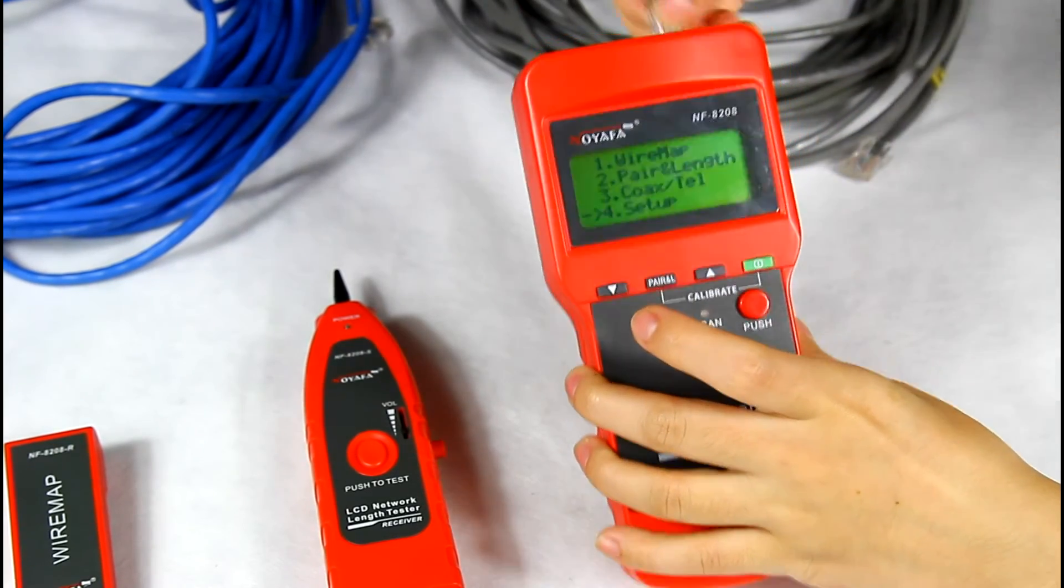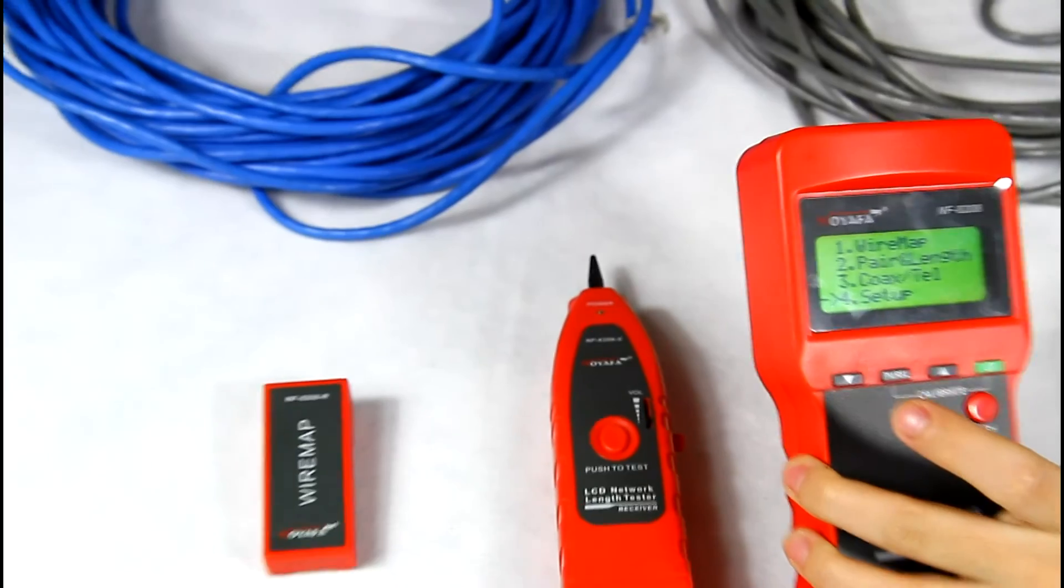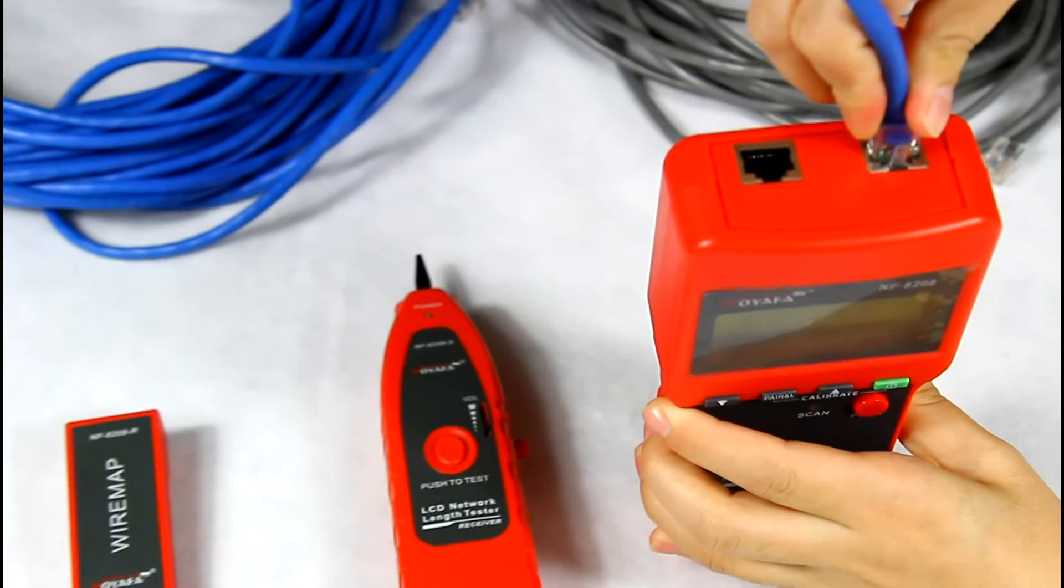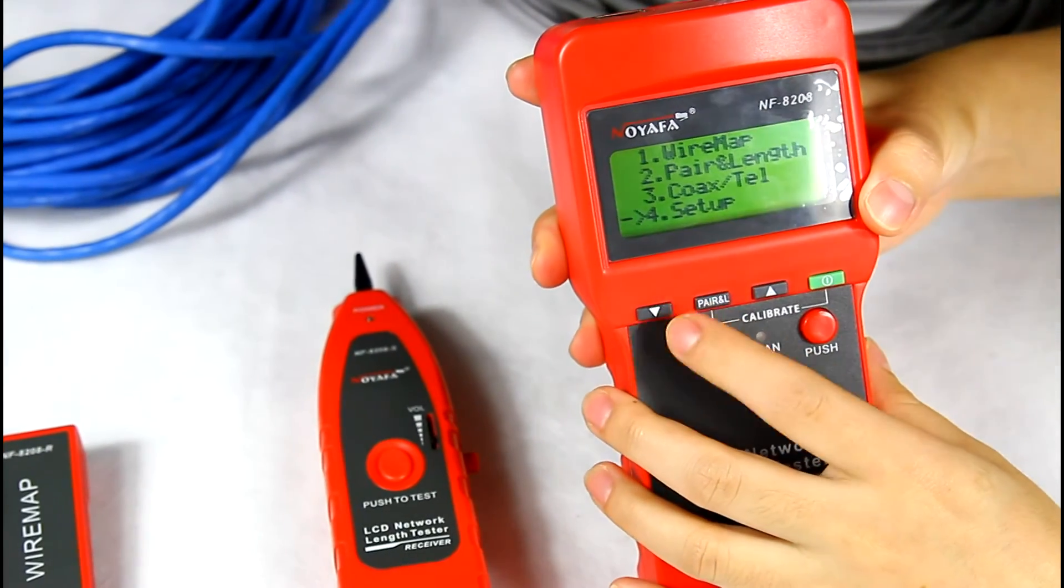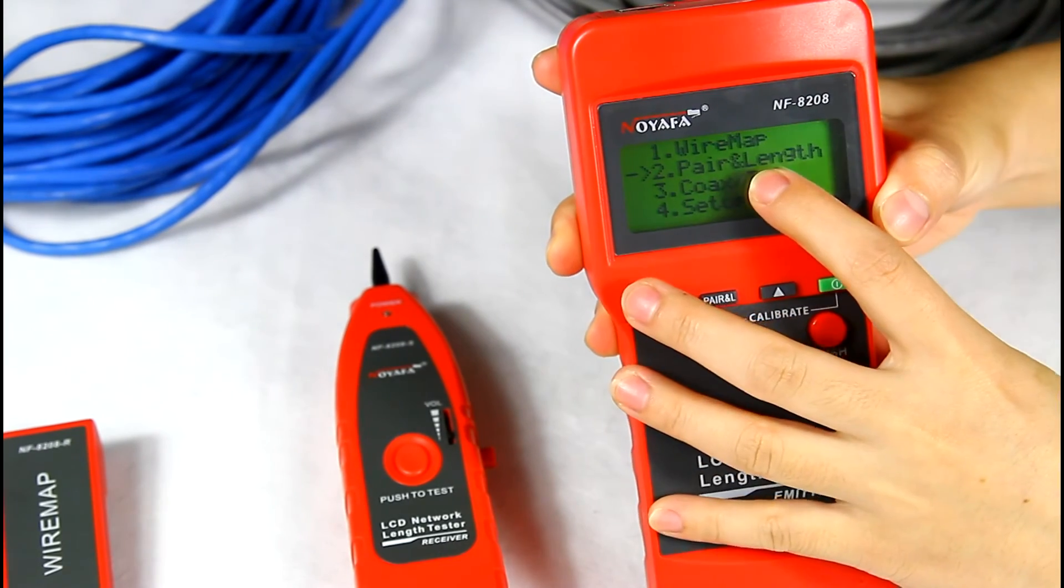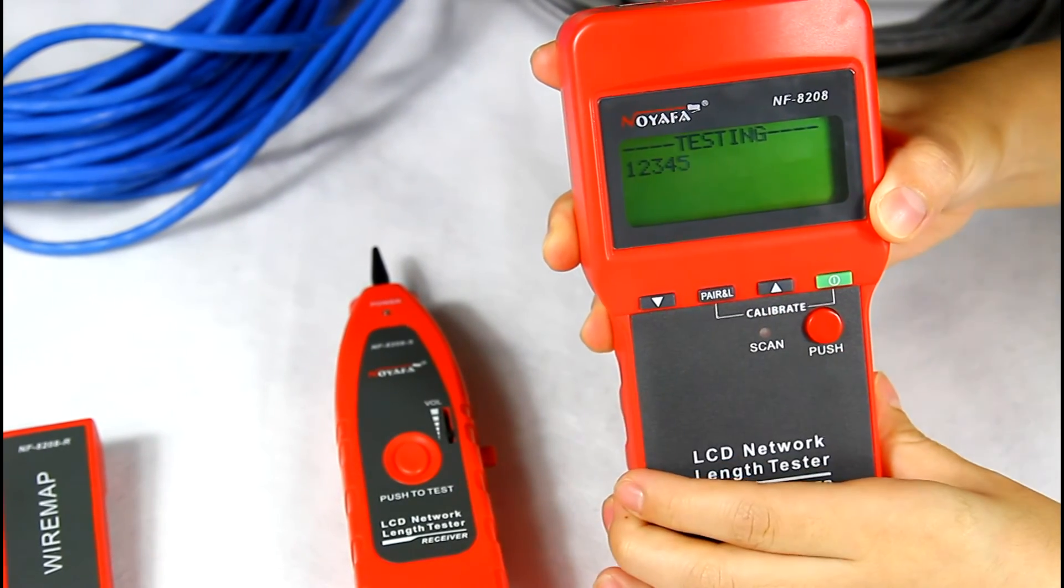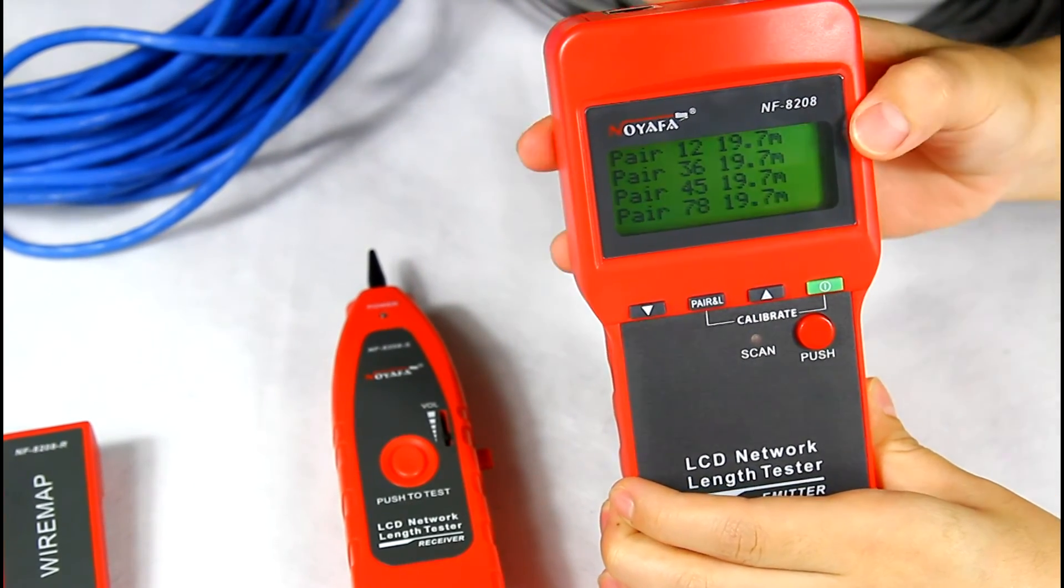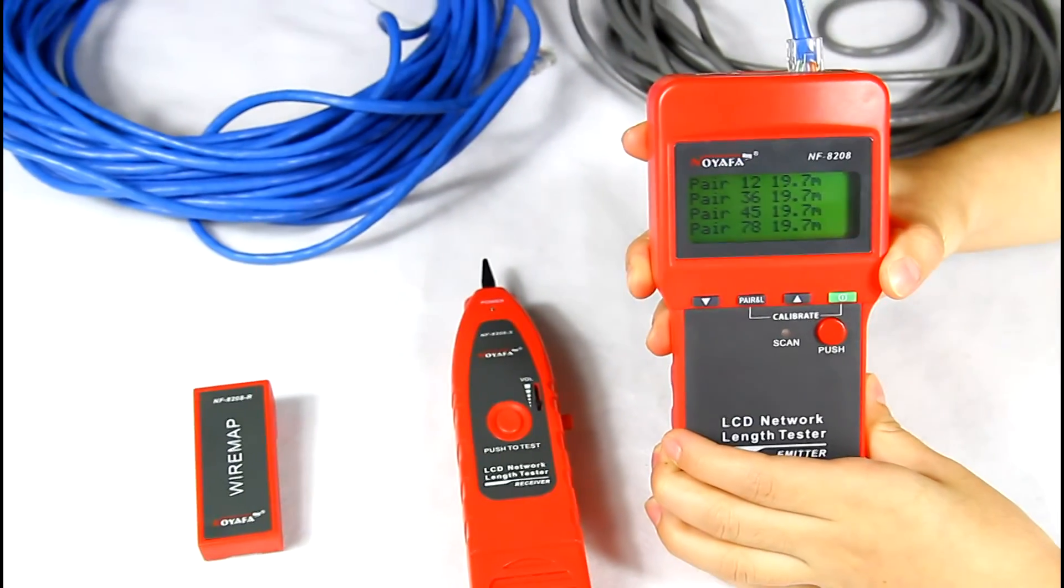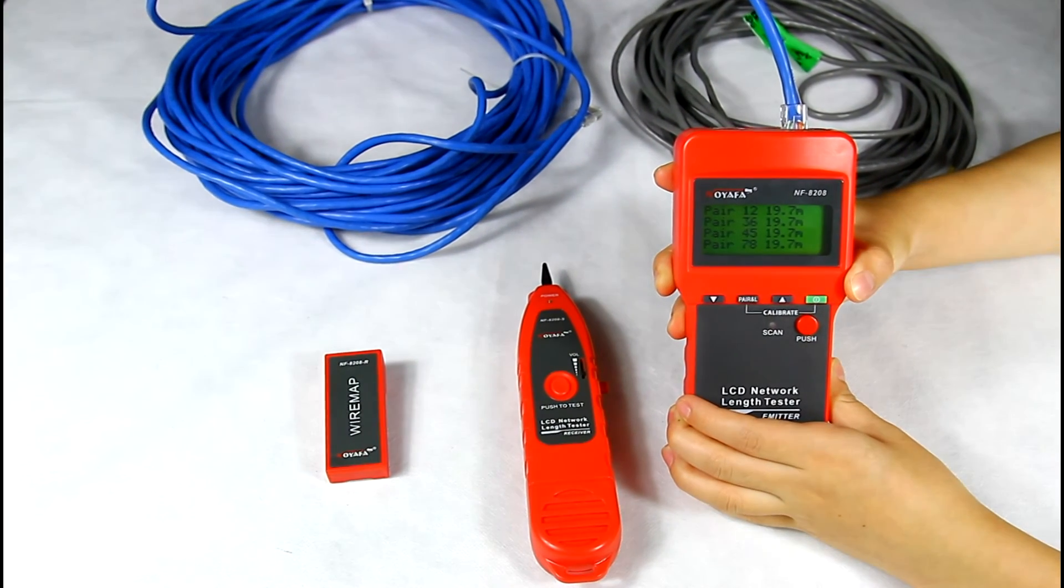Next step, we use a longer network cable. Insert to the main port and choose the power and length. The result shows this cable is 90.7 meters. This is the function of testing the cable length.